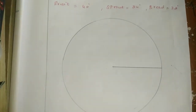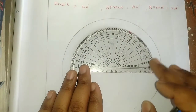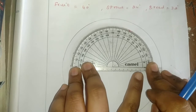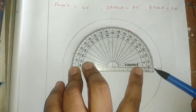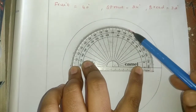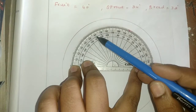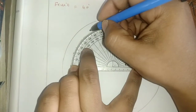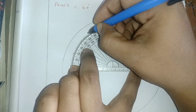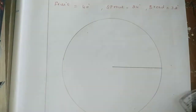So, carefully listen. First, for Vegetable, the degree is 128 degrees. Place the protractor and you can see: 0, 10, 20, 30, 40, 50, 60, 70, 80, 90, 100, 110, 120, 128. Mark a dot at 128.